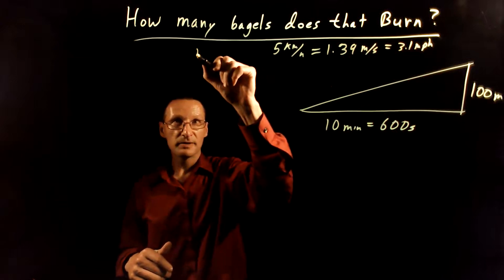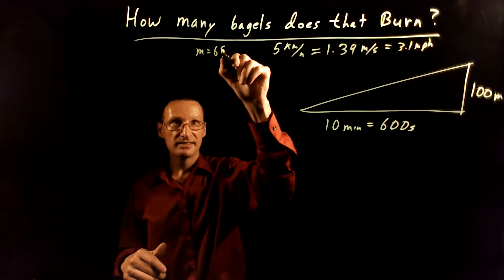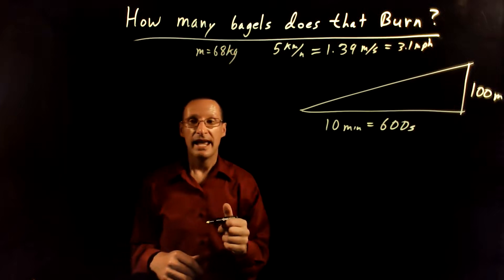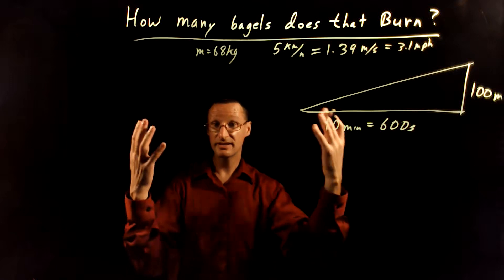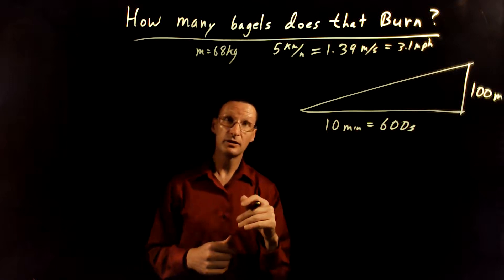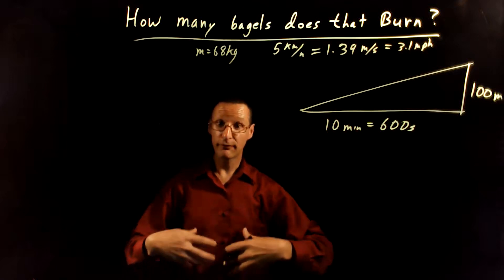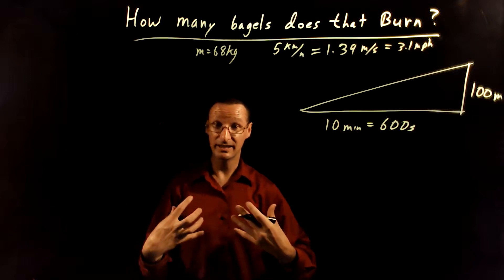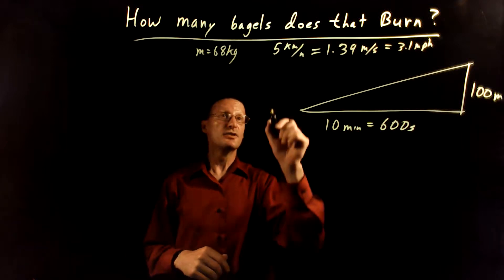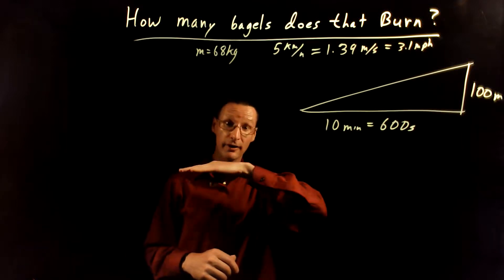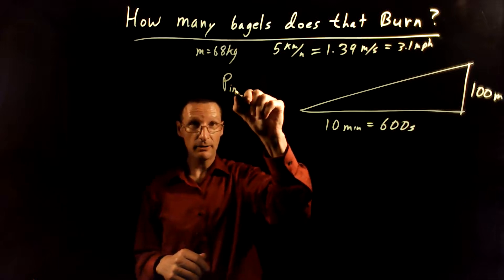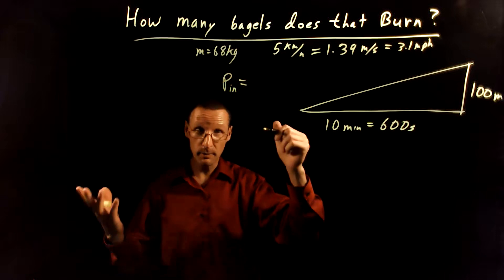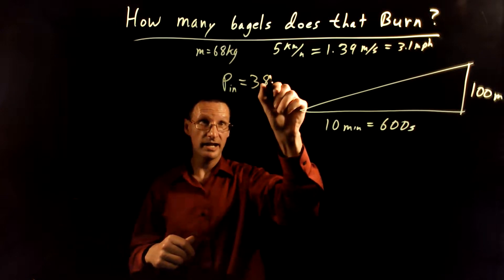Now, for the purposes of this, we're going to say that my mass is 68 kilograms. And the nice thing about these parameters, the reason I chose these parameters, is that there's a table in our textbook that we can look up how much energy does it take from inside of our bodies, how much do we spend input to walk 5 kilometers an hour on a flat surface. And when we look this up, the power input from our bodies is 380 watts.